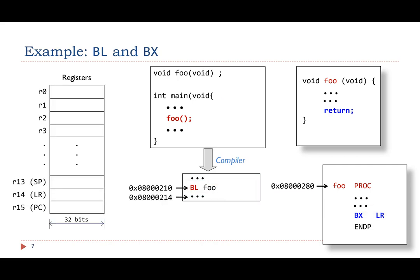Suppose the memory address of the instruction BL foo is 0x800210, and the subroutine foo is stored at the memory location 0x800280. Since the BL instruction takes 4 bytes in the memory, the memory address of the instruction immediately after the BL instruction is 0x800214.